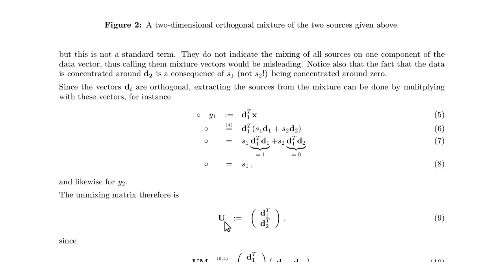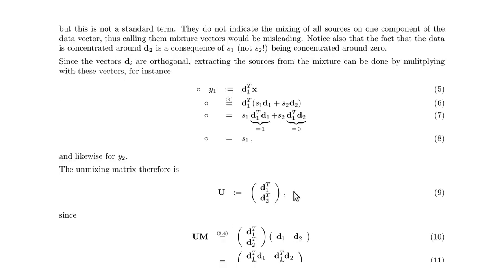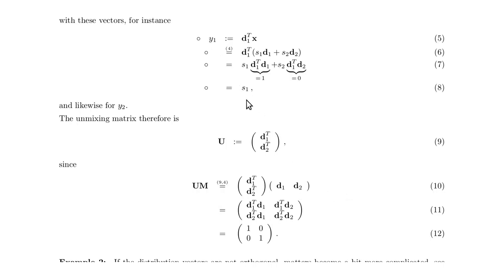We do this for both components, y1 and y2, which allows us to combine the two vectors into a matrix U — our unmixing matrix. Multiplying U with M, which is [d1^T; d2^T] times [d1, d2], because the vectors are orthogonal we get zeros in the off-diagonal entries, and since they are normalized we get ones on the diagonal — the identity matrix. So we know how to unmix a mixing done by an orthogonal matrix, i.e., just a rotation. Basically, U is the transpose of M.